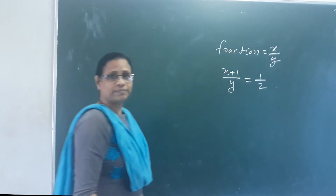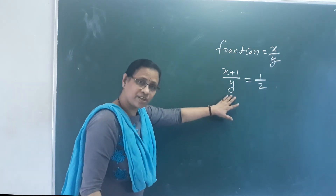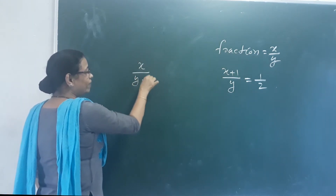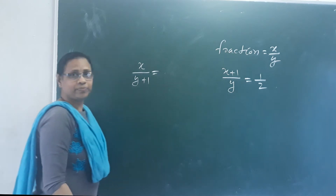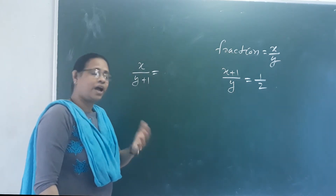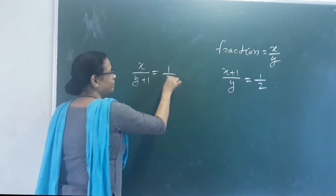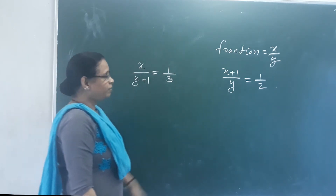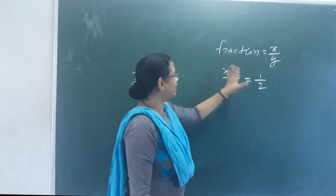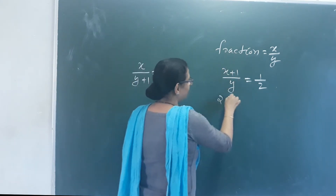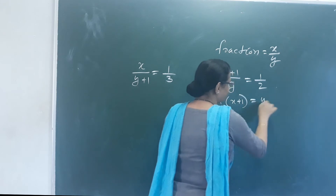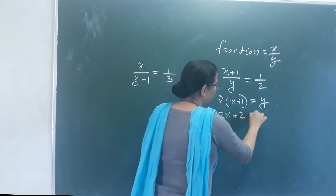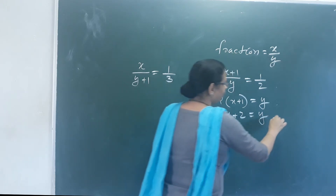We add 1 to the denominator: X over Y plus 1, and simplify to get 1 by 3. Cross-multiplying the first condition: 2 into (X plus 1) equals Y. Distributing: 2X plus 2 equals Y. That is Equation 1.